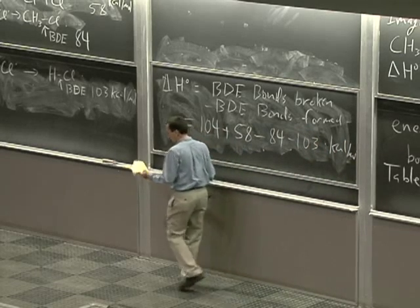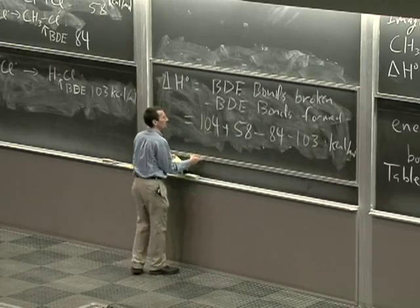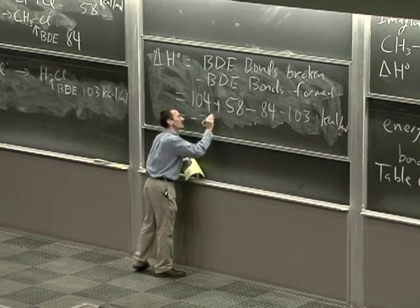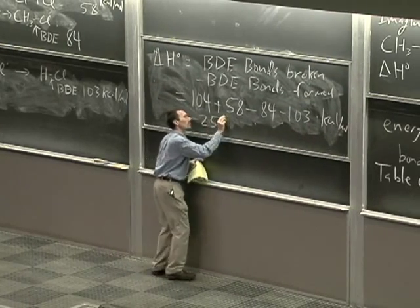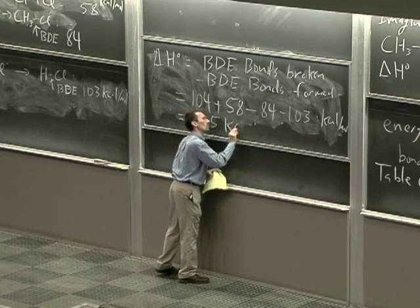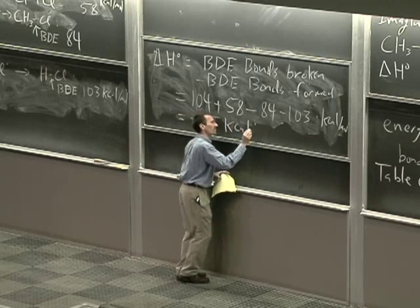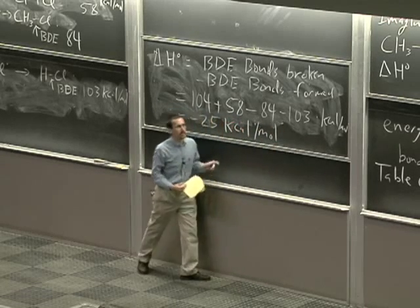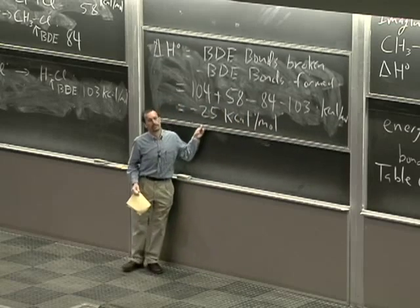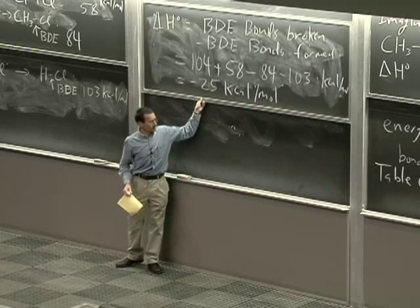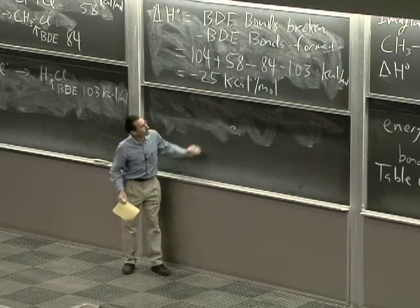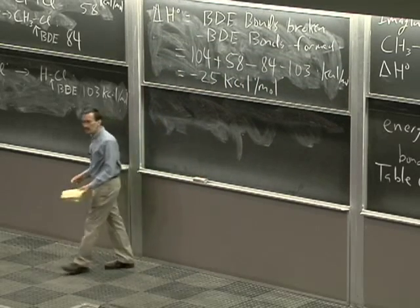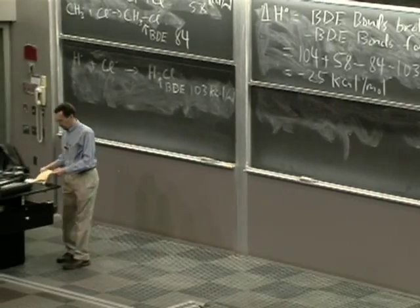The energy of the reaction is the price we pay in bonds broken minus the rewards we get in bonds made. If you form a bond, it makes heat — negative enthalpy means heat is given off. If you break a bond, you have a positive value; you have to put energy in. The tally is 104 plus 58 minus 84 minus 103, giving negative 25 kilocalories per mole. That's an exothermic reaction.